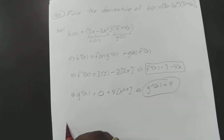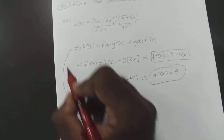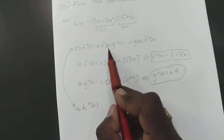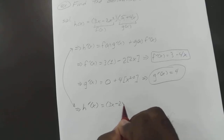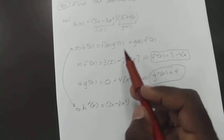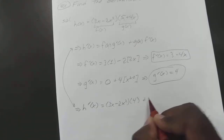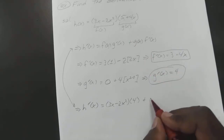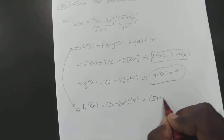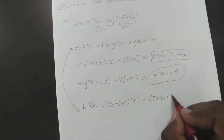So now we plug it into that formula. So h prime of x, just using that formula, it's f of x — which is 3x minus 2x squared — times g prime of x, which is 4, plus g of x — which is 5 plus 4x — times f prime of x, which is 3 minus 4x.